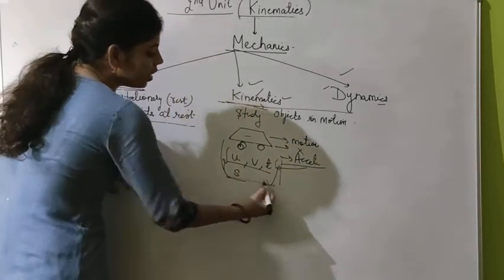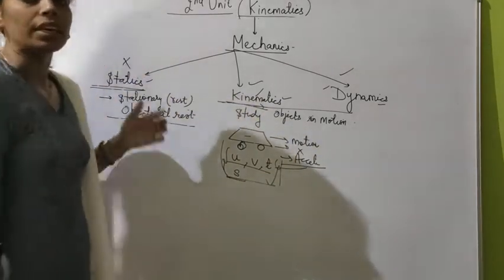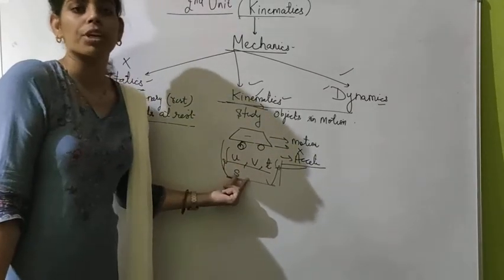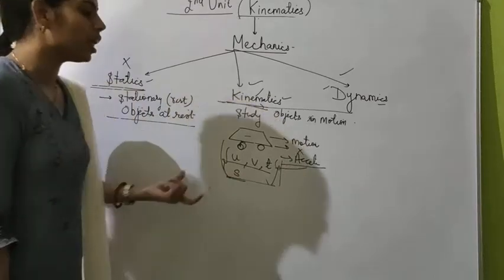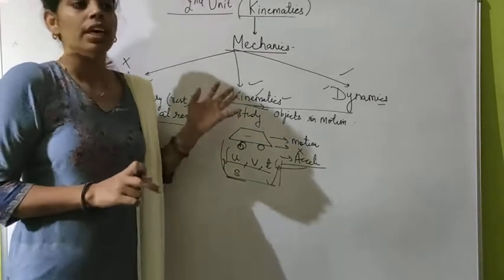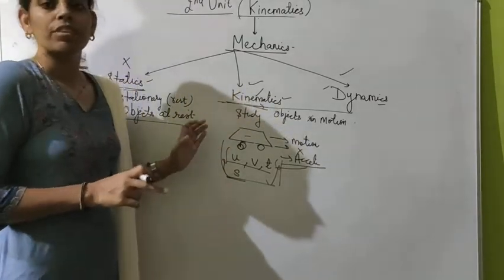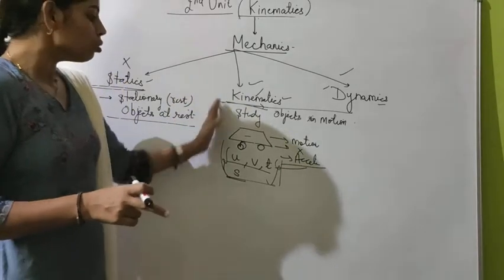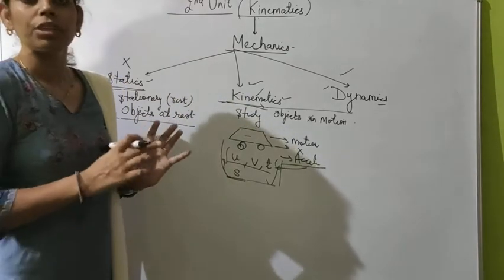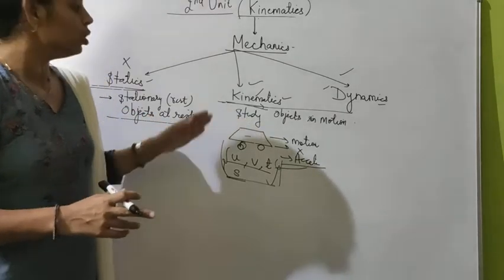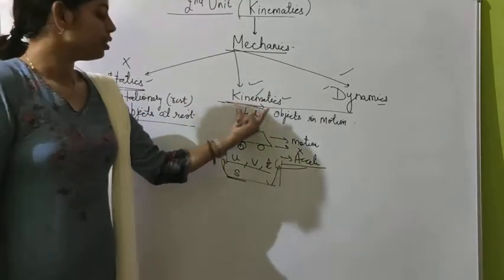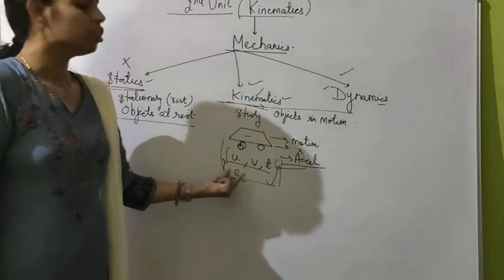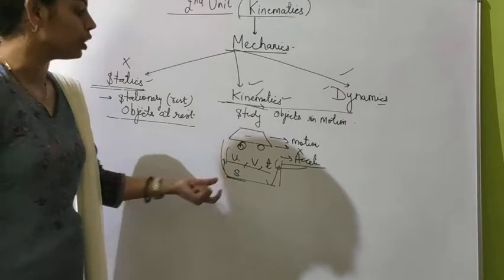Under kinematics, we study all these physical quantities and the relations between them — like the equations of motion you studied in 9th class: V = U + AT, S = UT + ½AT². These are the relations between U, V, T, and S, and we study these under kinematics.